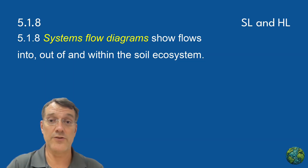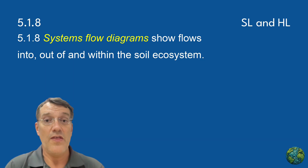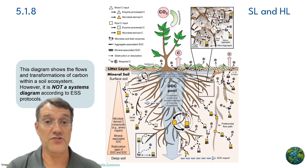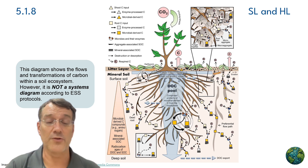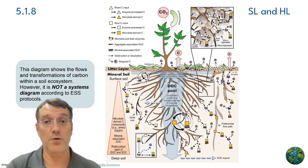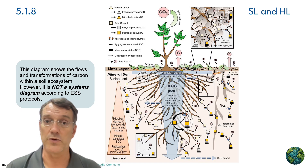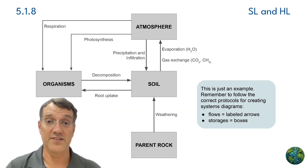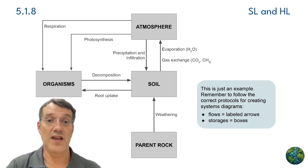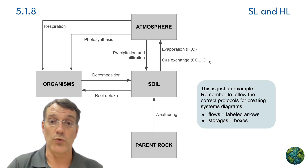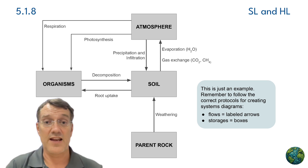Systems flow diagrams show flows into, out of, and within soil ecosystems — these visual tools help us understand the complexity of soil systems. A diagram showing carbon flows and transformations within a soil ecosystem illustrates many simultaneous transfers and transformations. However, such a diagram is not a systems diagram according to ESS protocols unless it uses the standard format of boxes for storages and labeled arrows for flows. The soil system connects to the atmosphere through gas exchange and evaporation, to organisms through root uptake and decomposition, and to parent rock through weathering.